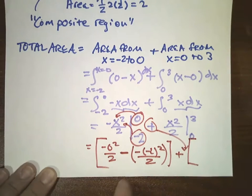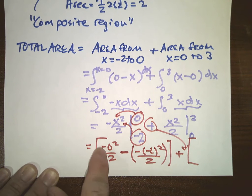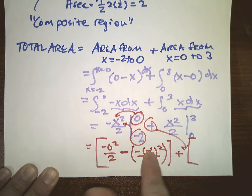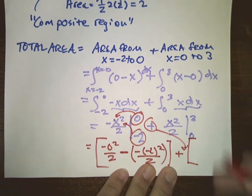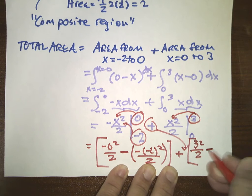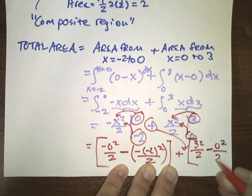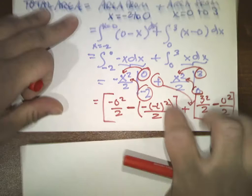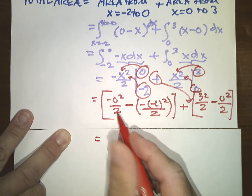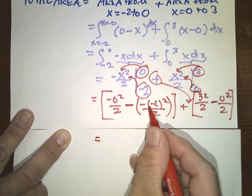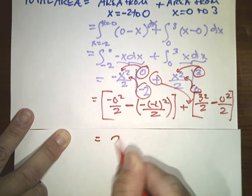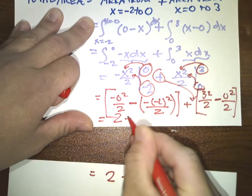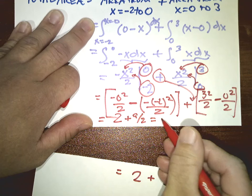I know that this is a lot of bookkeeping of the negative signs here. The minus was here because that's what was in the problem, then you subtract because of the fundamental theorem of calculus, and the minus in the problem again, then the other minus because the 2 was negative. So substituting in: negative 0 squared over 2, minus negative (-2) squared over 2, plus 3 squared over 2, minus 0 squared over 2. Negative 0 squared over 2 is 0, then minus a negative of negative 2 squared over 2, so that's actually 2, then plus 9/2.